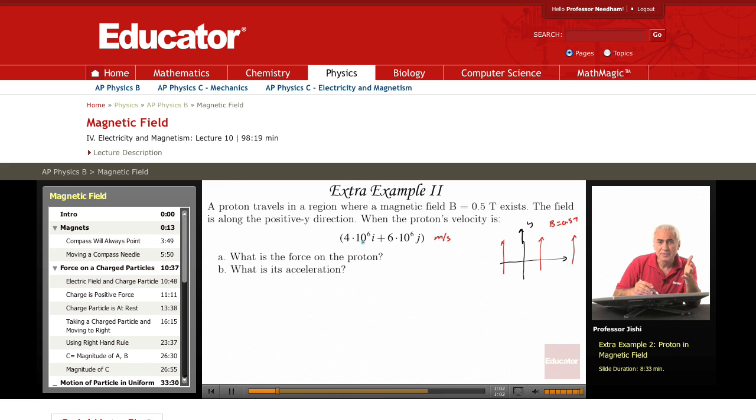So this means that the velocity has a component 4 million meters per second along the x-axis, another component which is 6 million meters per second along the y-axis.